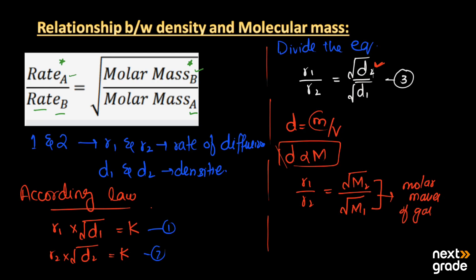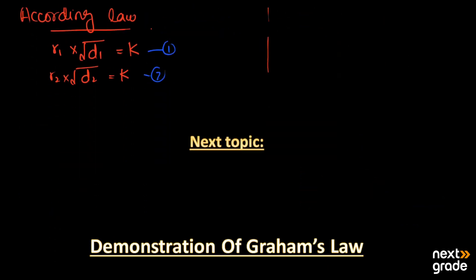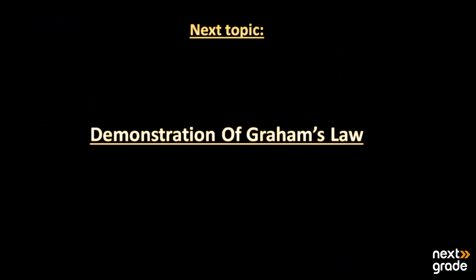From this equation, we have a simple relationship: the ratio of the rates of diffusion of the gases equals the square root of the ratio of their molar masses (M2 to M1). This is the relationship between molar mass and the rate of diffusion. If you have any queries, ask in the comment section. Next, we will discuss a demonstration of Graham's law with an example.